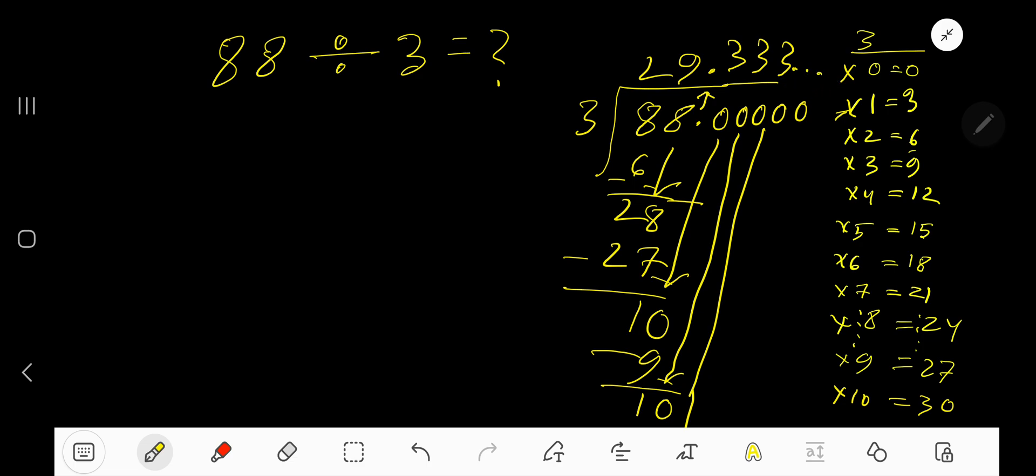If you want to write this answer in a different way, place a bar above the 3. This means that this 3 is repeating.